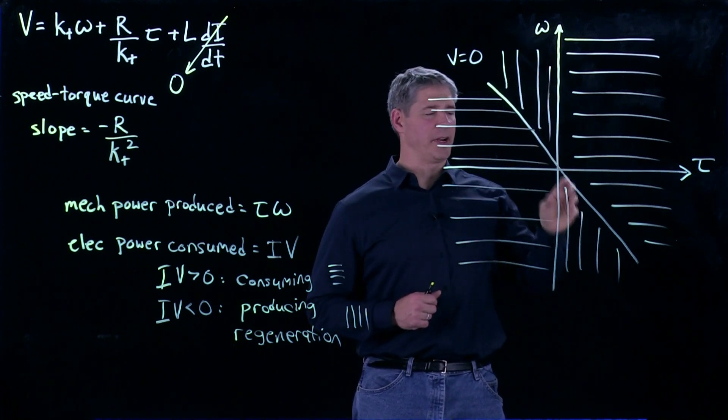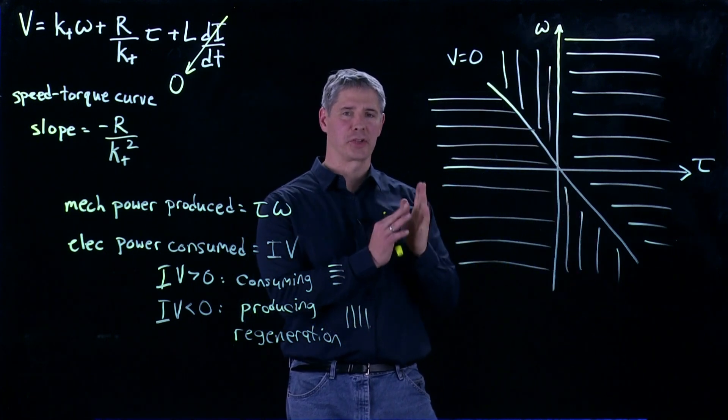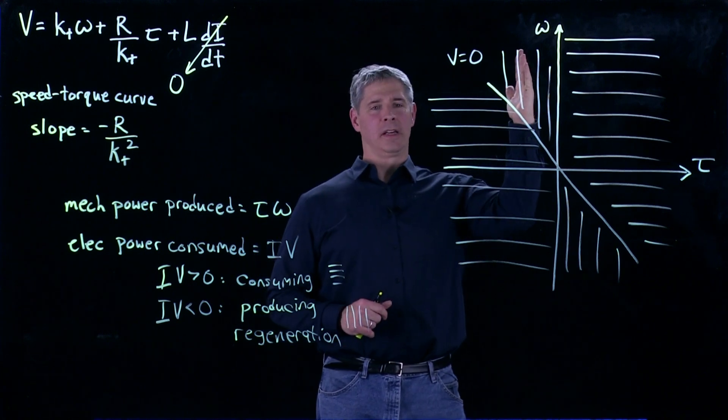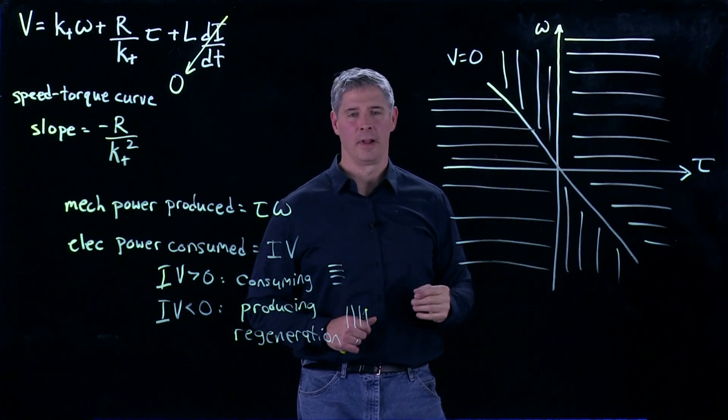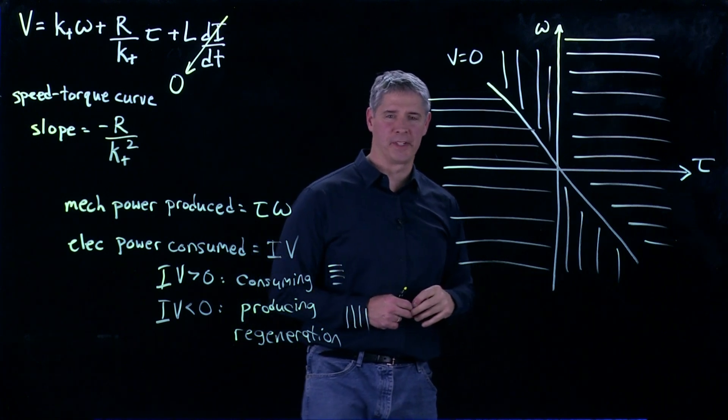And then the region where we're regenerating, where we're creating electrical power, is going to shrink. Until eventually, if we're perfectly vertical, then there's no region where we're regenerating at all, and the motor is essentially acting like a resistor.